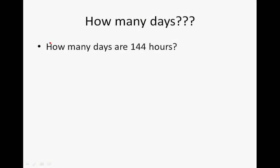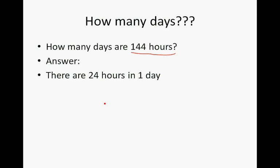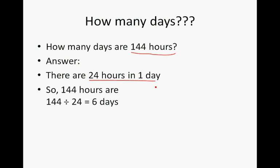How many days are in 144 hours? There are 24 hours in one day, so to go from hours to days we divide by 24. So 144 divided by 24 gives us 6 days. We can also check it the other way: 6 times 24 gives us 144 hours.